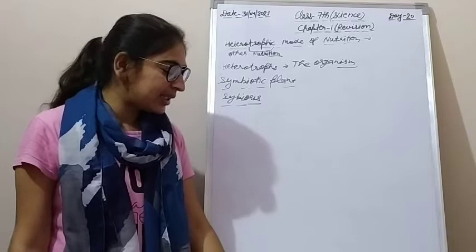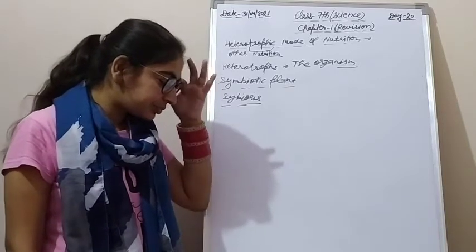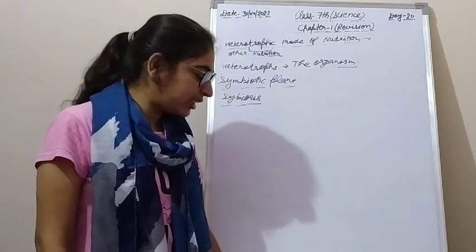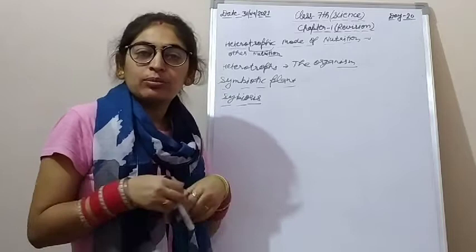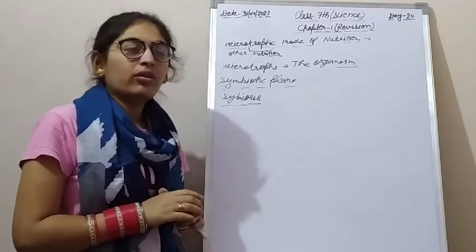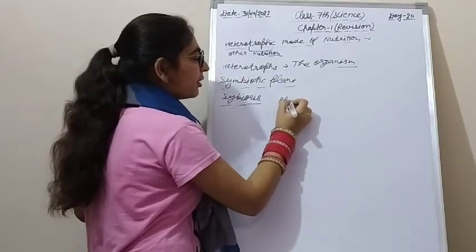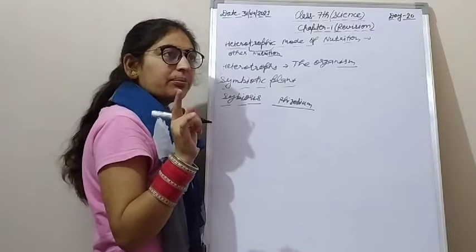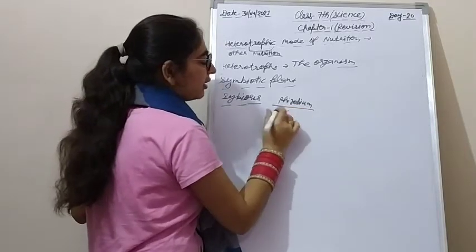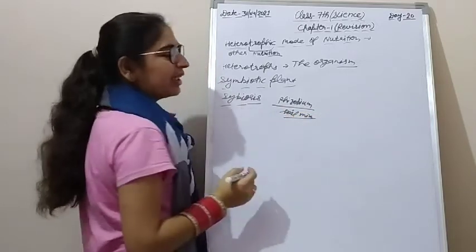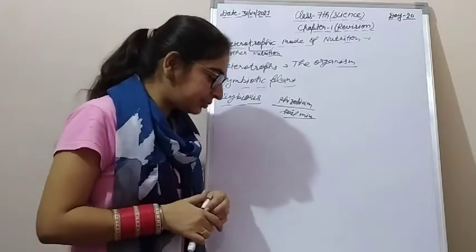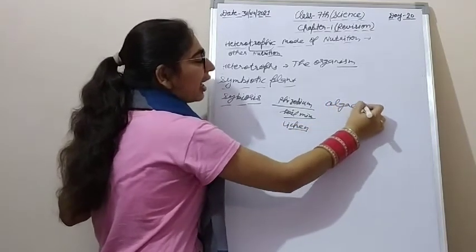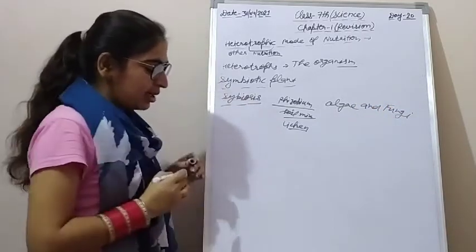For example, rhizobium bacteria live in the roots of leguminous plants. The rhizobium bacteria convert atmospheric nitrogen into nitrogenous compounds and mix them into the soil, which the leguminous plant gains through its roots. Another example is lichens, which are made of algae and fungi — one provides shelter and the other provides food.